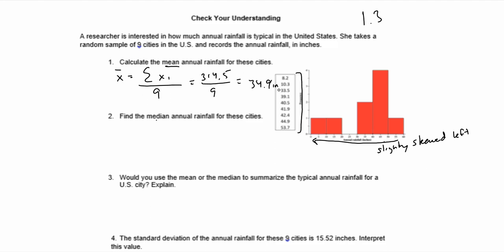Now from here, find the median annual rainfall. So the median is the middle value. Because there are nine cities, we're looking for the fifth value. So we're going to split this in half. One, two, three, four. That'll be the first half. And one, two, three, four. And you see the value right in the middle. So our median value is going to equal 40.5 inches.